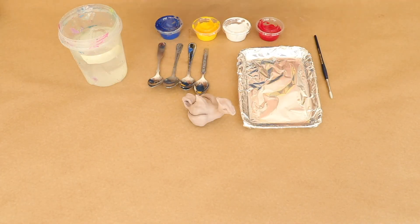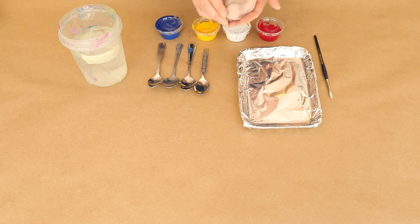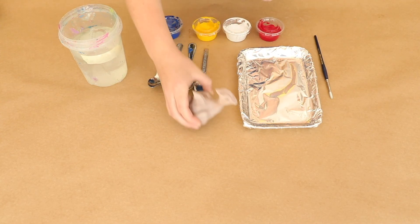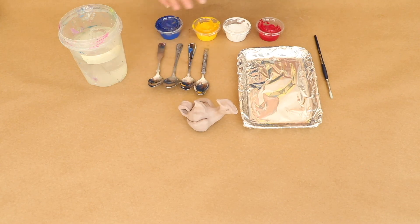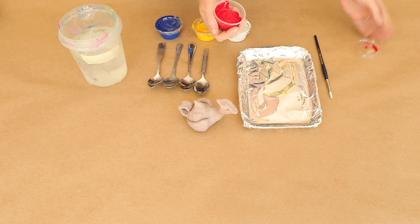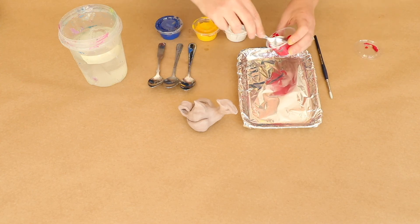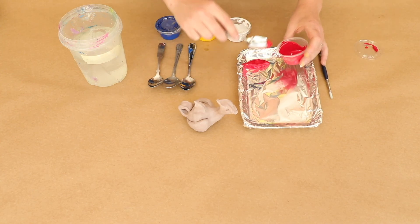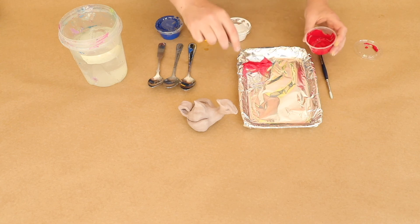Step seven. Once your underwater sea creature is dry, then we can paint it. So it's very handy to have some spoons so that you can get the paint out of little containers and put it onto the tray. And put them in each corner so they're separate.